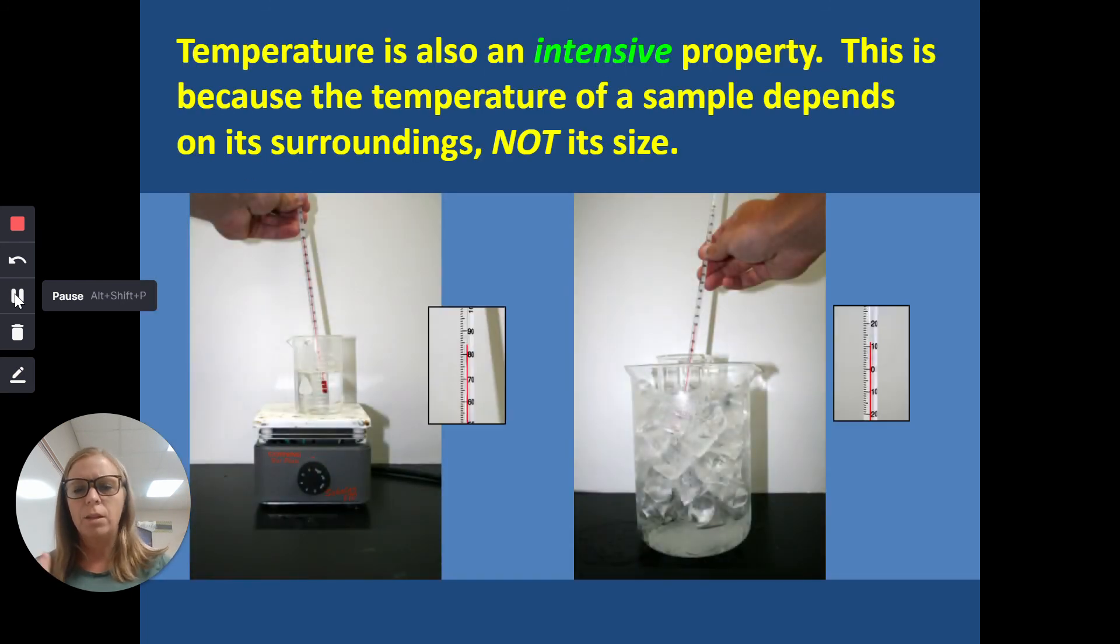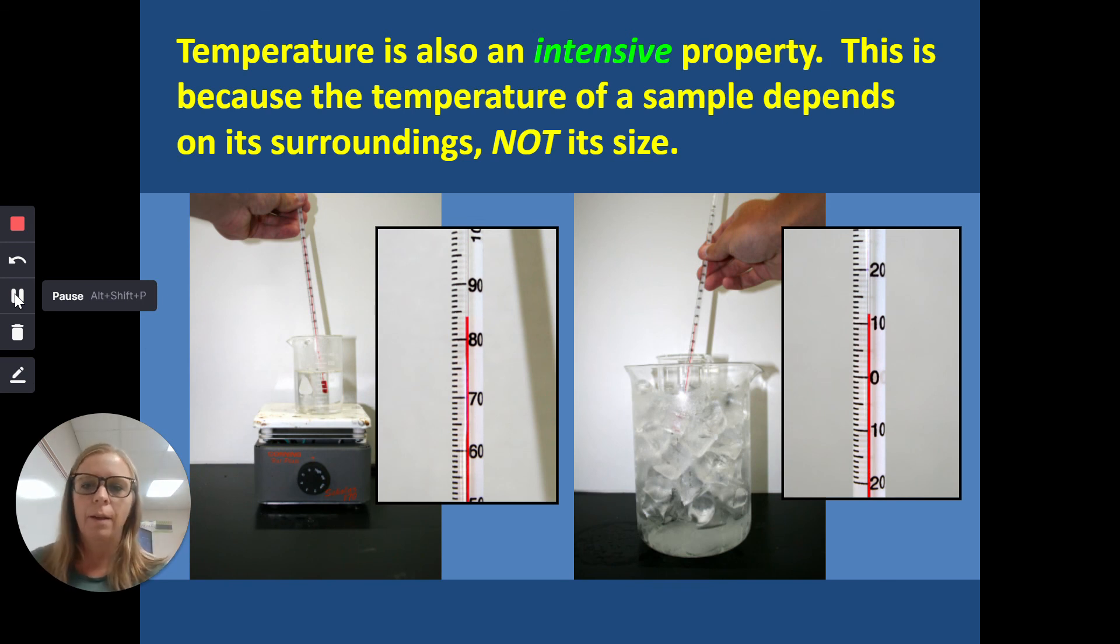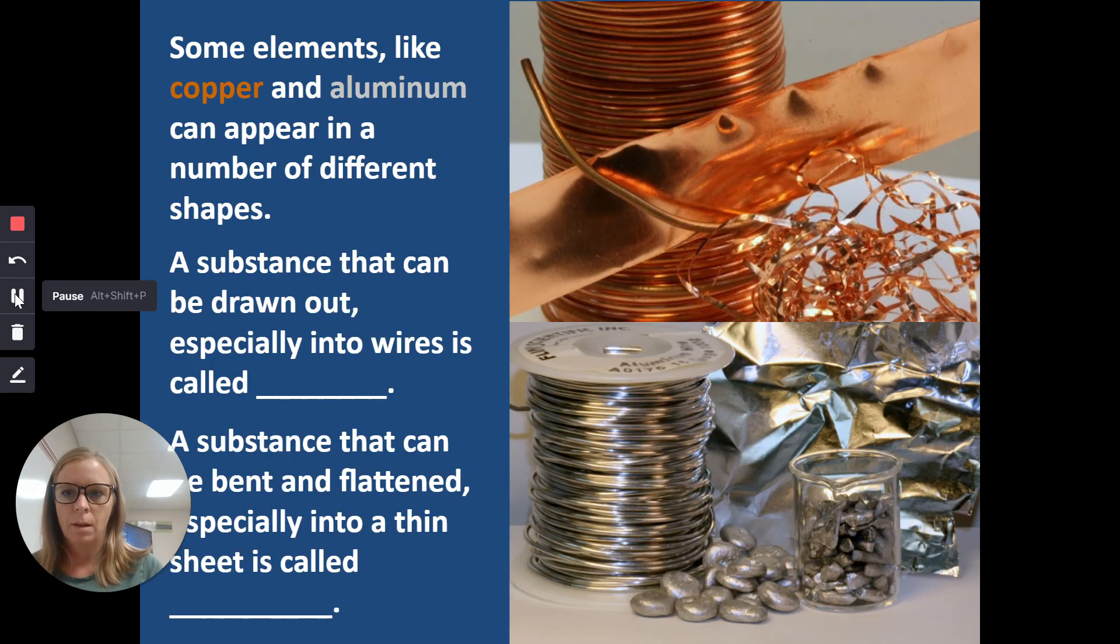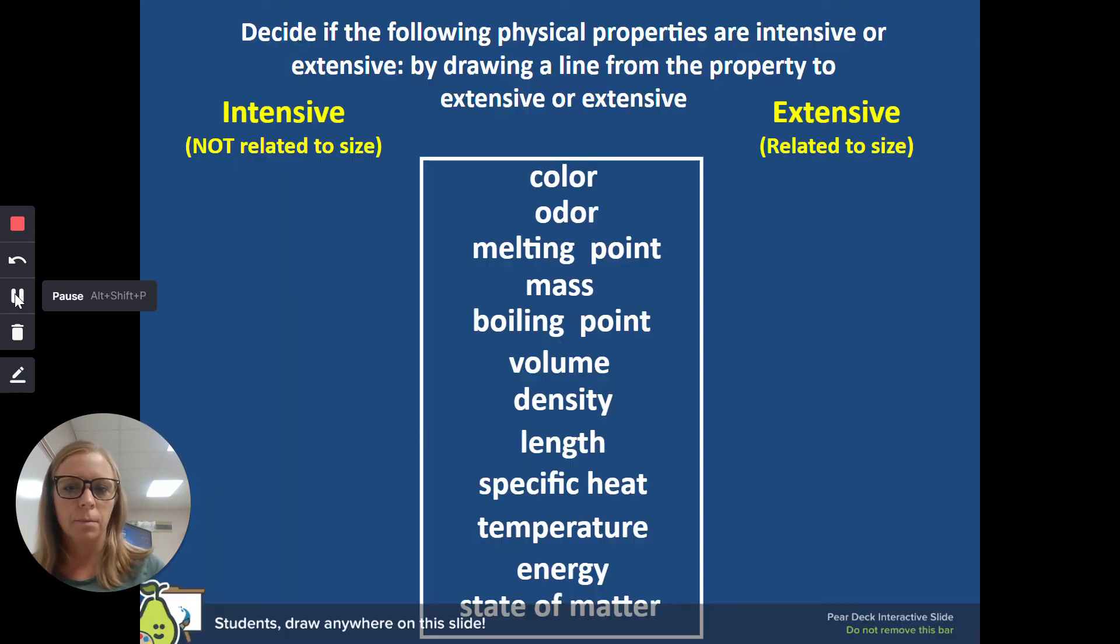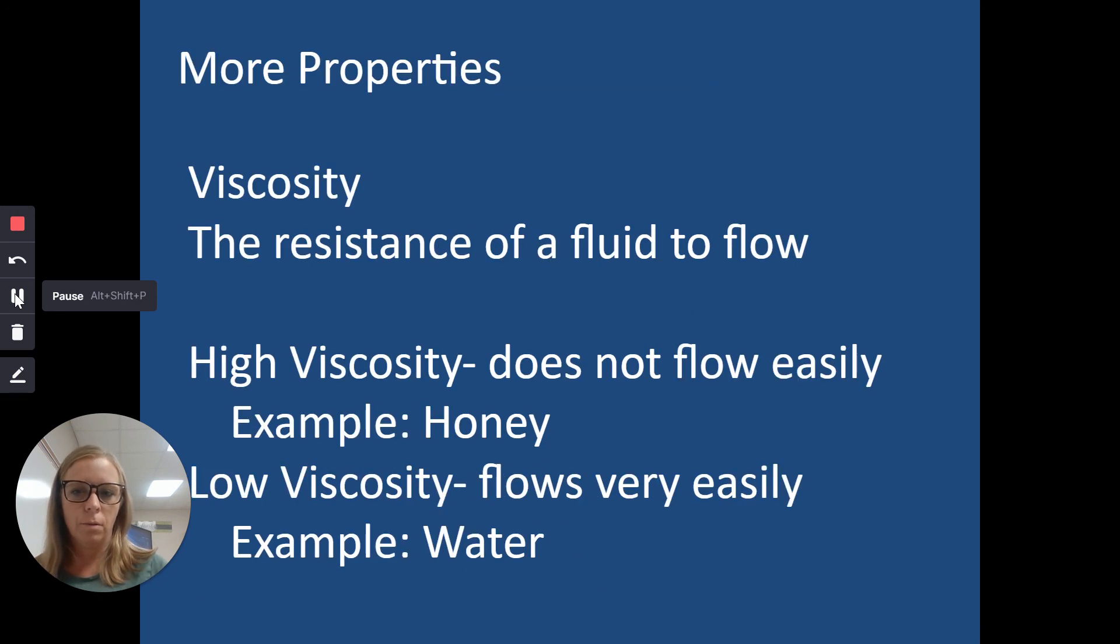Temperature is intensive, it has to do with its surroundings, not the size. Remember, extensive is its size, intensive is not. Malleability and ductility, that's going to stay the same. Copper is copper is copper. Copper has a certain malleability and a certain level of ductility that can be put into wires, and so that doesn't change as long as it's copper. Same thing with magnetism.